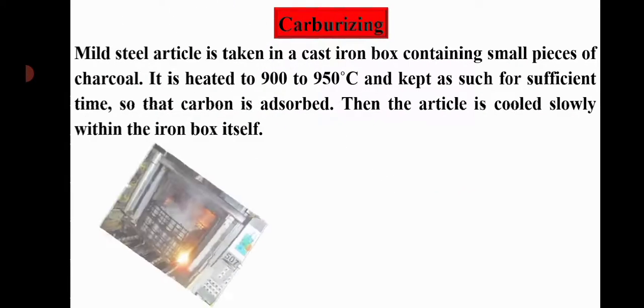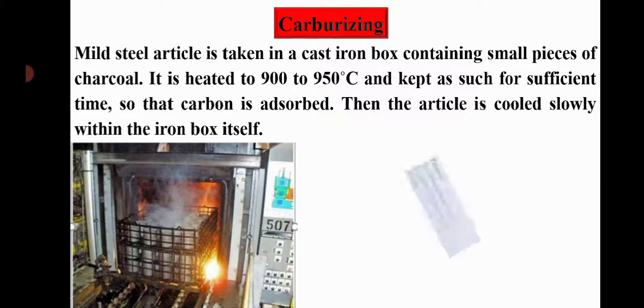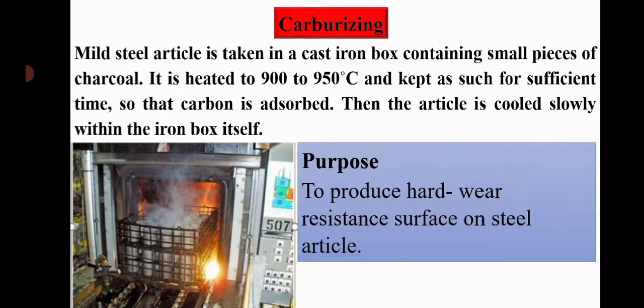Carburizing involves placing a mild steel article in a cast iron box containing small pieces of charcoal. It is heated at 900 to 950 degrees Celsius for sufficient time so that carbon is absorbed, then the article is cooled slowly within the iron box itself. The purpose of carburizing is to produce a hard wear-resistant surface on steel articles.